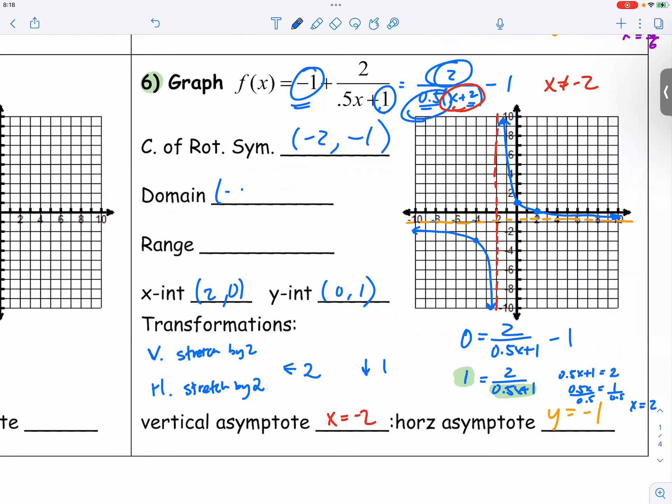The domain, it's negative infinity to negative 2, from negative 2 to infinity. The range is anything but negative 1. So that's where the interval would get broken apart into two intervals. And here we go.